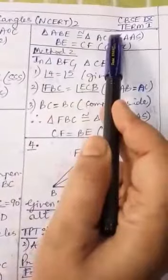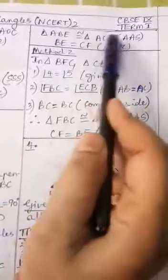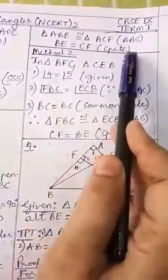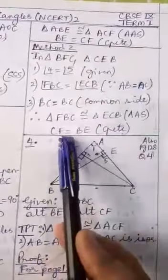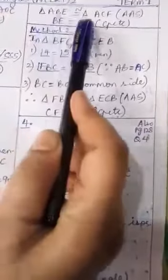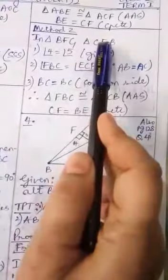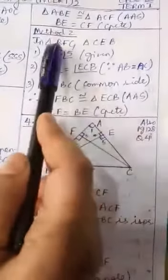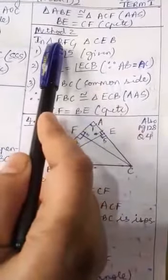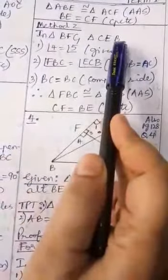Now that the triangles are congruent, their corresponding sides are equal, so we have BE equal to CF by CPCTC. Now see the second method. BE is a side of one triangle and CF is a side of the other triangle. So let us take up these two triangles and show that they are congruent to each other.